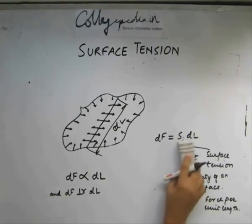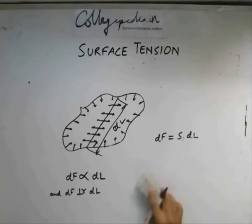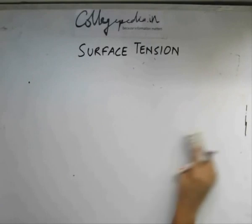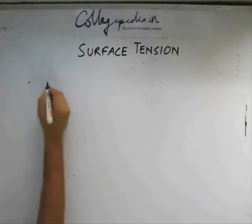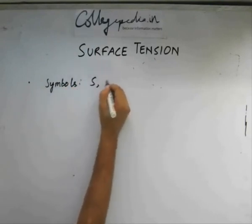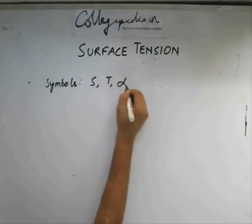When we are talking about surface tension, let me tell you different symbols which can denote surface tension. Surface tension is denoted by symbols like s, t, or sometimes alpha.